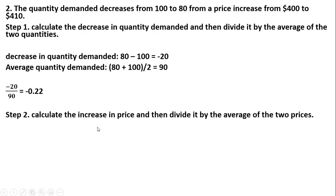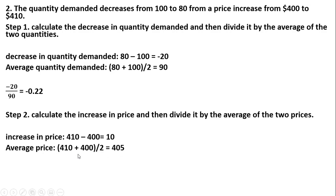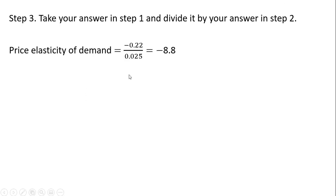For step 2, we calculate the increase in price — a $10 increase — and divide it by the average of the two prices. The increase in price is 410 minus 400, which is $10. The average price is $405. So 10 divided by 405 is 0.025. In the final step, we take minus 0.22 and divide it by 0.025, giving a price elasticity of demand of minus 8.8.